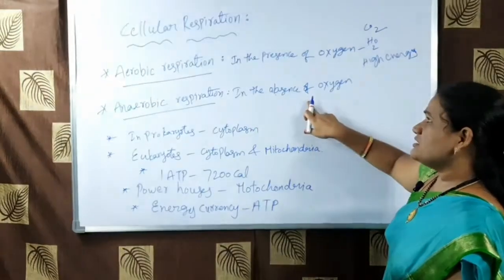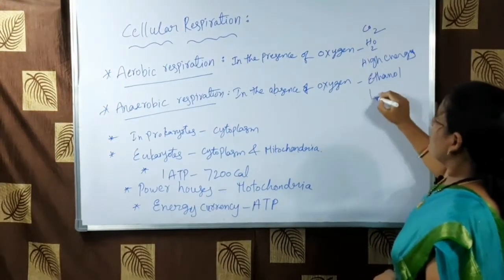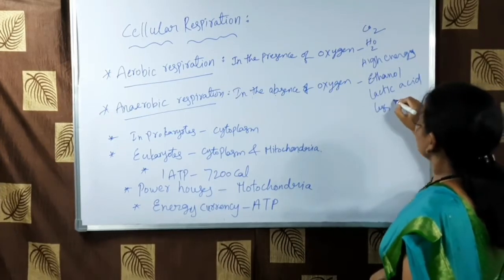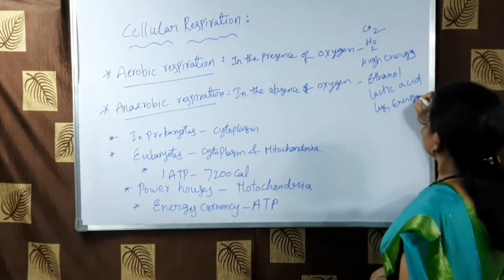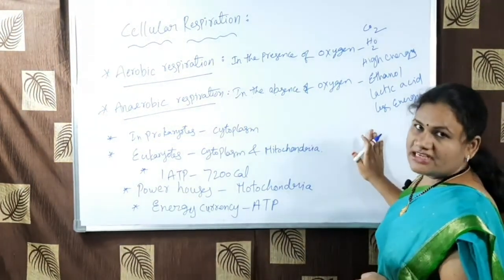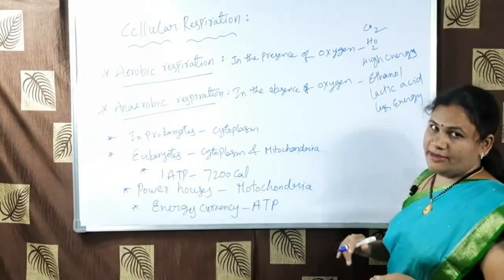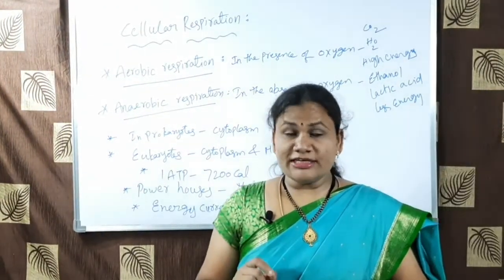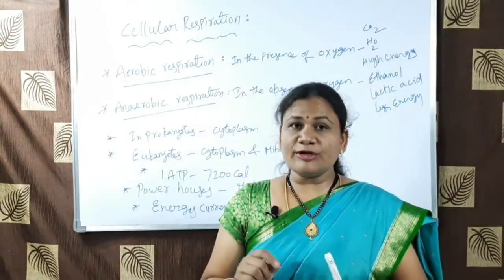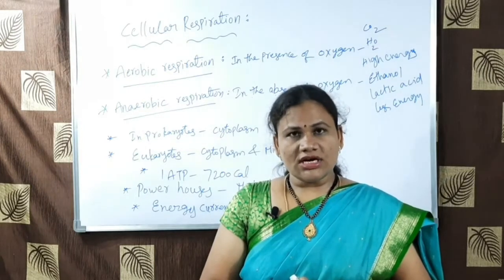If oxygen is available, that is aerobic respiration, in which carbon dioxide, water, and a high amount of energy are produced. If oxygen is absent, ethanol or lactic acid and a less amount of energy are produced. This anaerobic process generally takes place in bacteria and yeast, while aerobic respiration takes place in plants and animals.